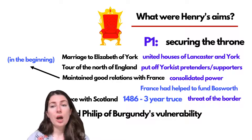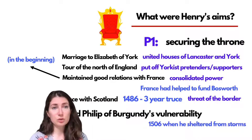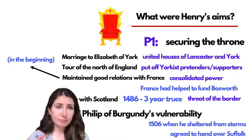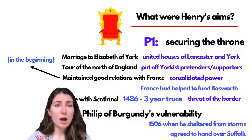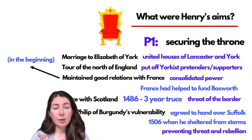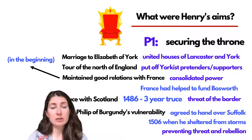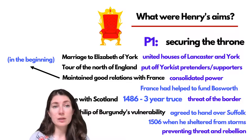We can also use the example of 1506, where Henry capitalised on Philip of Burgundy's vulnerability when Philip was forced to shelter from storms. Henry used this moment to get him to agree to various things, including handing over Suffolk, who was posing a threat to his throne. I've tried to give you the analytic points to take from these pieces of evidence — state the evidence, use a connective like 'this means that' or 'this led to', and then provide the analytic explanation.